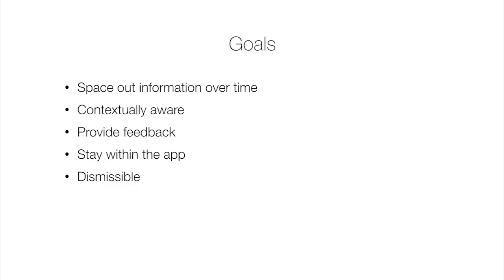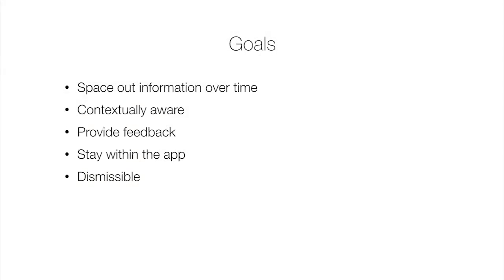We also wanted to make our tutorial contextually aware — we want to show hints for navigating around the news feed when you're actually in the news feed, and hints on how to open a web link when you're looking at a web link in a long article. We also wanted to provide feedback so people can associate the right action with the right behavior, and not just be swiping around and completing things by accident. We wanted to keep users within the app, not take them to a separate tutorial land. And we wanted to make it dismissible — we don't want to force anyone to complete it if they weren't ready.